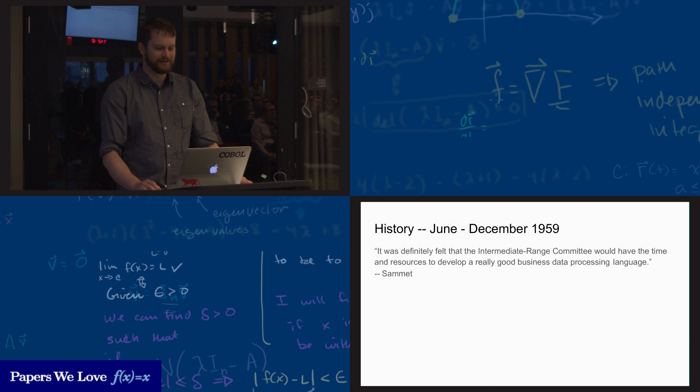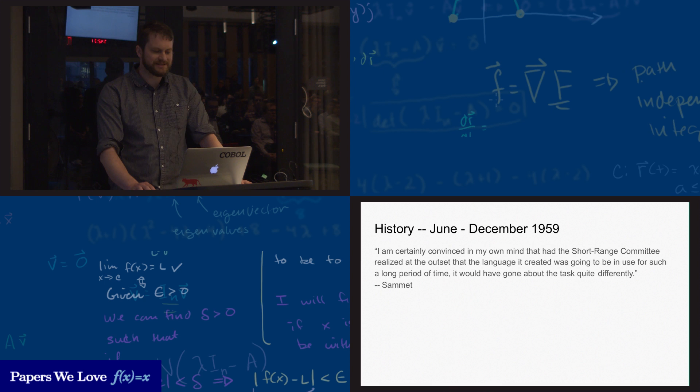Samet, in her paper, basically says that the short-range committee believed that their work would be used by the intermediate-range committee, which would have time to develop a really good language. That didn't really happen. The recommendations of the short-range committee pretty much turned into COBOL. Samet notes that had the short-range committee realized just how long their work would be used, they probably would have gone about their task differently. I'm sure we can all relate to that.